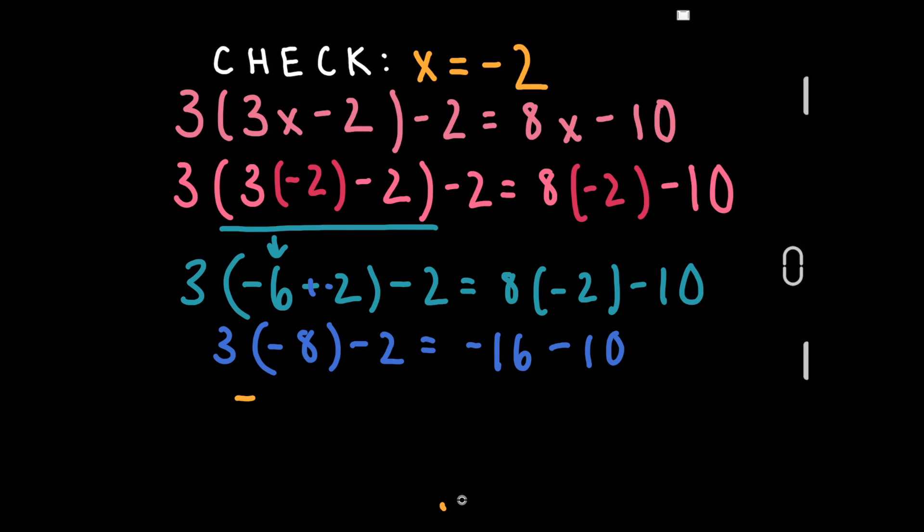3 times negative 2 is negative 6 minus 2 is negative 8. 3 times negative 8 is negative 24 minus 2 is negative 26.